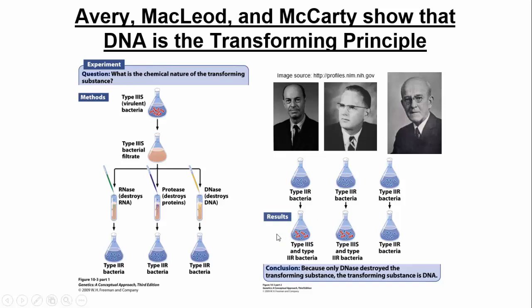They injected each solution into the non-deadly bacterial strains to see which of these three turned deadly. In the first scenario — destroying RNA — transformation did occur. In the second scenario — destroying proteins — transformation occurred again. So if you destroy RNA but still get transformation, RNA must not be the genetic material. If you destroy proteins and get transformation, proteins must not be the genetic material. But in the third flask, when you destroy DNA, you don't get transformation — so that's evidence that DNA must be the genetic material.